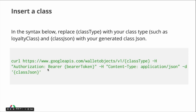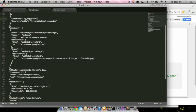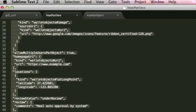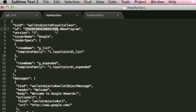To insert a class, this is the same URI I showed you before — it allows us to POST to this URI with a class type. We're going to use loyalty as an example, but you could use offers as well. We need to send the bearer token we got using the tokenutil, and we need to send the JSON for the object we want to create. We can either send it directly in the call or send the path to a file where we saved the JSON.